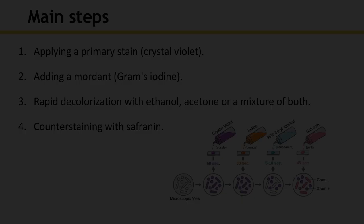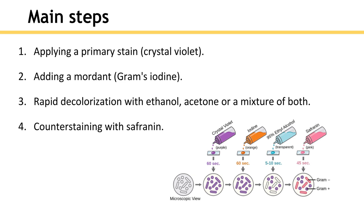Now let's see the main steps of gram staining. First, we apply the primary stain, which is crystal violet. Then we add a mordant, which is iodine, followed by decolorization and addition of a counter stain. The primary stain is a chemical used in differential staining that colors all cells of the microorganism being tested. After using the decolorizing agent, the primary stain may be washed away or retained by the cells, which determines the different categories of microorganisms.